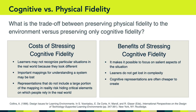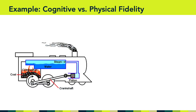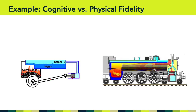Let's take a look at some examples of cognitive versus physical fidelity in graphic design. Here's an example of learning about a steam engine and how a train gets its power. In this picture, we see a visual representation that really emphasizes the basics of the system — we can peel away most elements of the train and focus on just the salient aspects of the steam engine. In contrast, here's a much more realistic and physically accurate representation of a steam engine.